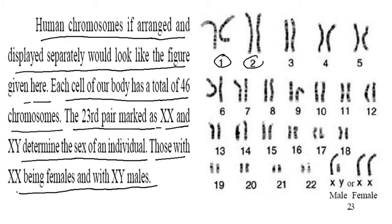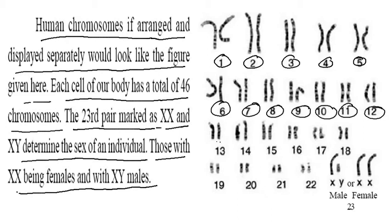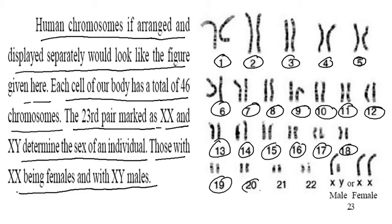The 23rd pair — XX and XY — determines the sex of the individual, those with XX being female and XY being male. You can count them: chromosome pairs 1 through 22, and chromosome pair 23. Male is having X and Y, whereas female has only XX.